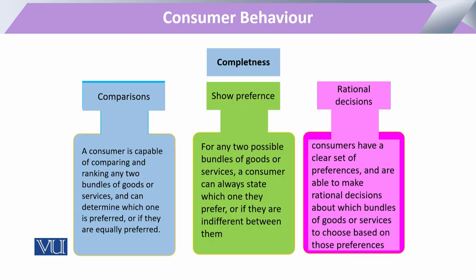What does completeness mean? When we talk about completeness, we are not referring to a single commodity but rather a consumption bundle. When we have consumption bundle A and consumption bundle B, in those bundles there can be various combinations of commodities — various goods can be in that combination.